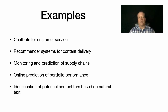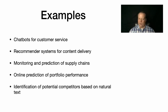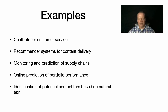A classic example many people try to apply AI to is portfolio performance — choosing exactly which stocks or equities to invest in to maximize overall portfolio performance. I was involved even early on as a graduate student in developing a system like this. As systems get better and better, so do competing systems, and the market keeps pace as it always does. Another niche example I really like is the identification of potential competitors for a firm based on natural language text.